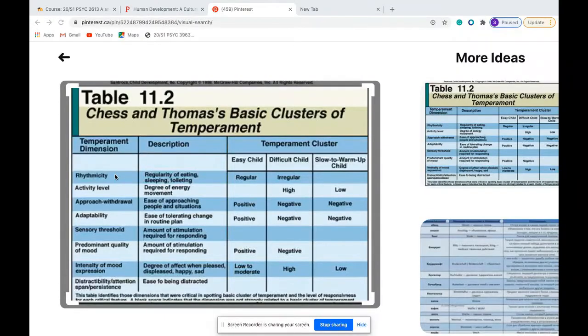Some of you might count eight, but it's actually because they have distractibility and attention span in the same category here. So the first one would be rhythmicity, basically the regularity of eating, sleeping, toileting. So basic needs, how often do these things occur, and activity levels.